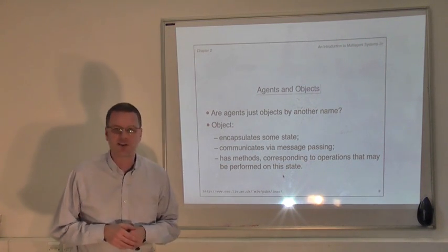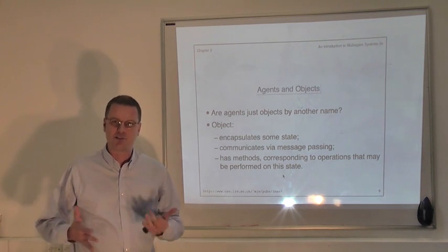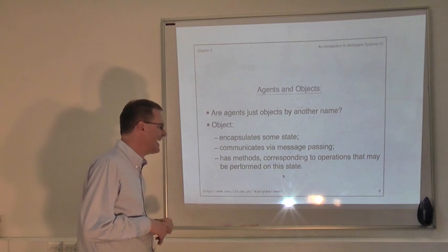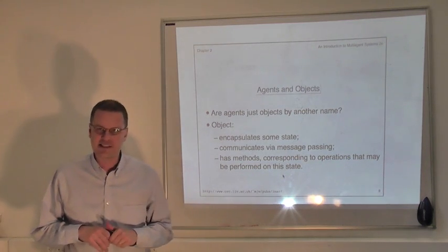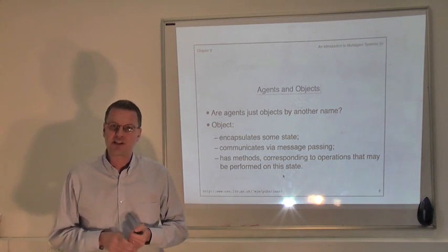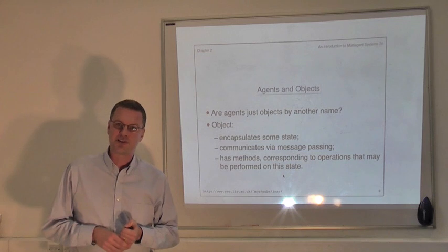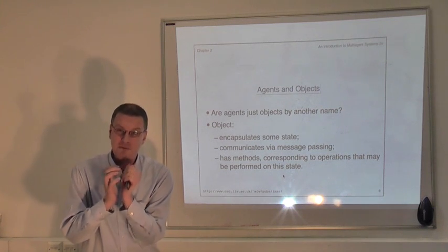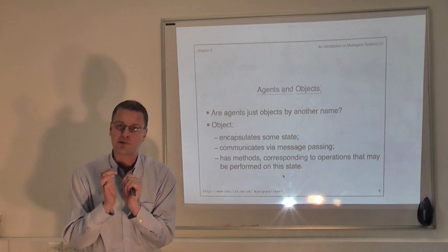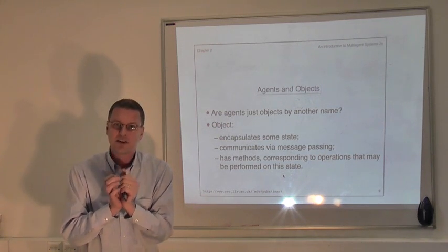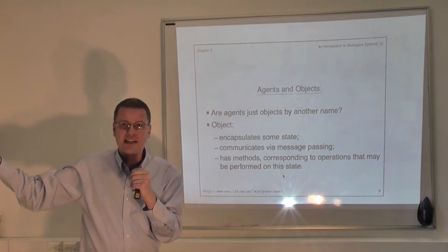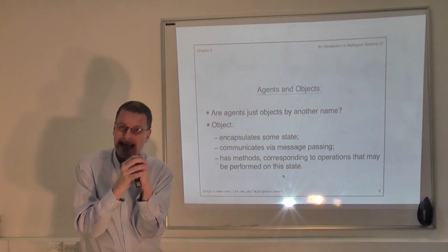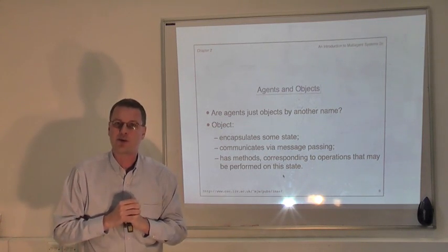Let's start by reminding ourselves exactly what an object is in the sense of Java, C++, or Smalltalk. The first important property that an object has is that it encapsulates some state. The notion of encapsulation is absolutely fundamental to object-oriented programming. What it means is that there is some set of variables within the object which is only accessible to the object itself, so other objects in the software world can't interact directly with that state — it's hidden away inside an object.